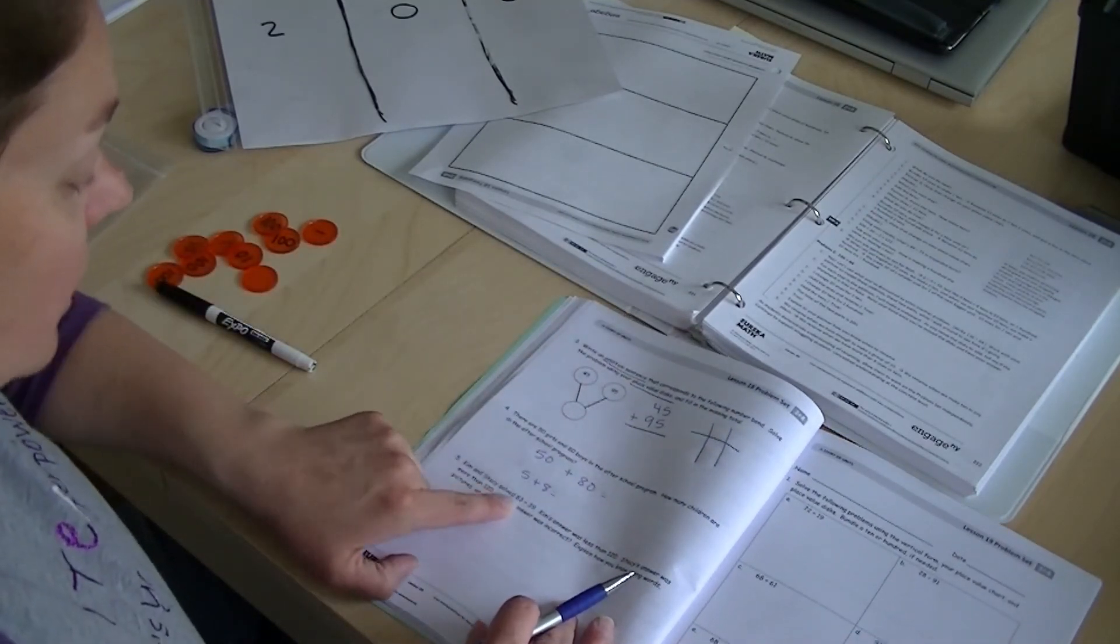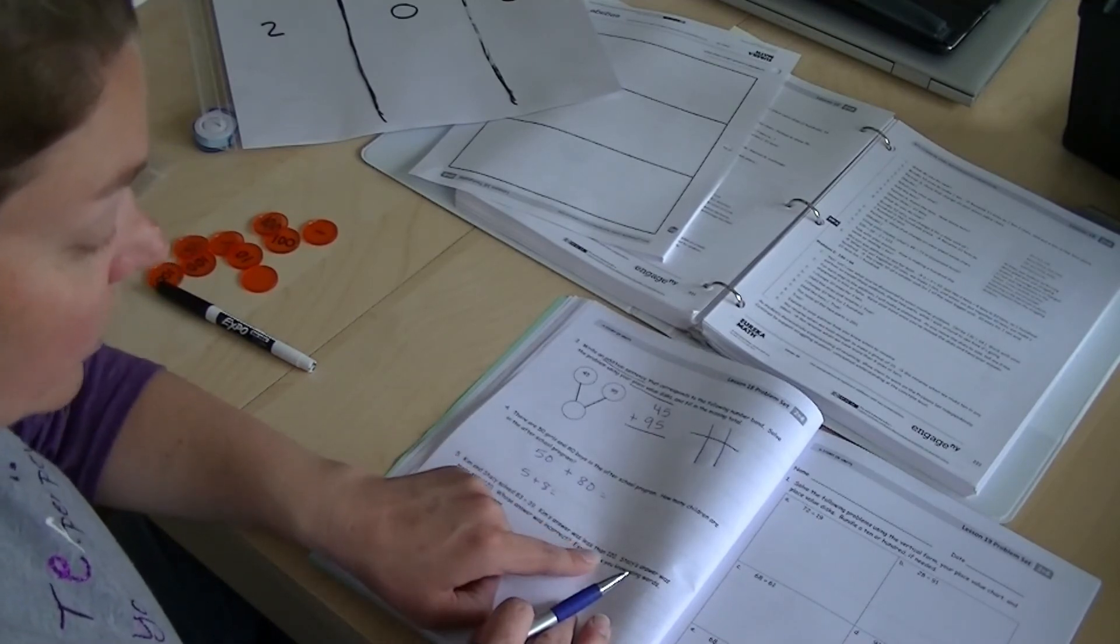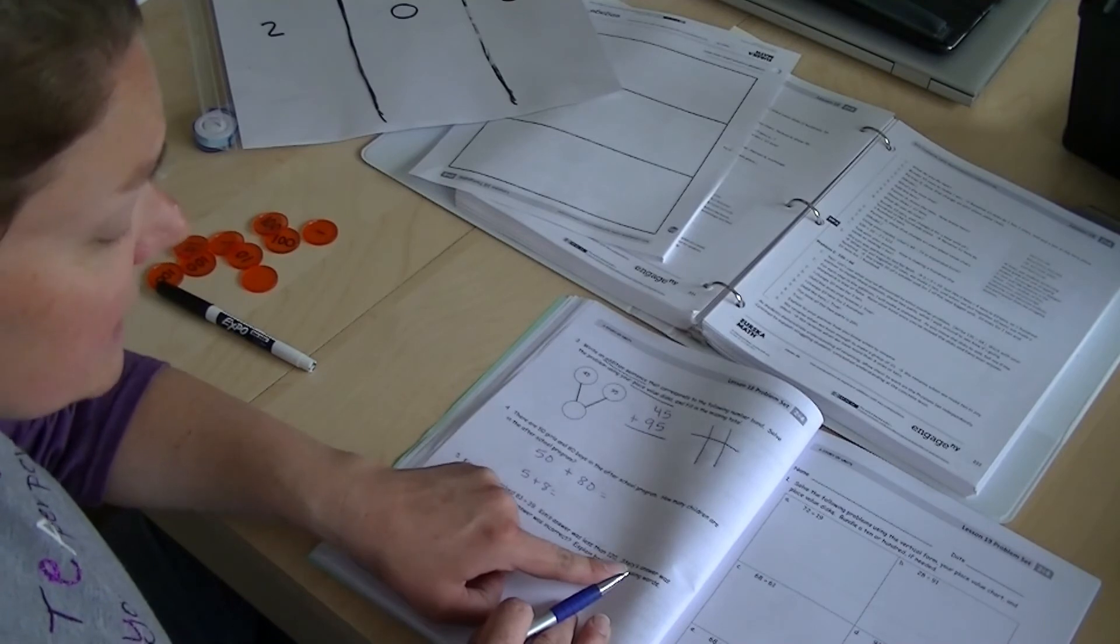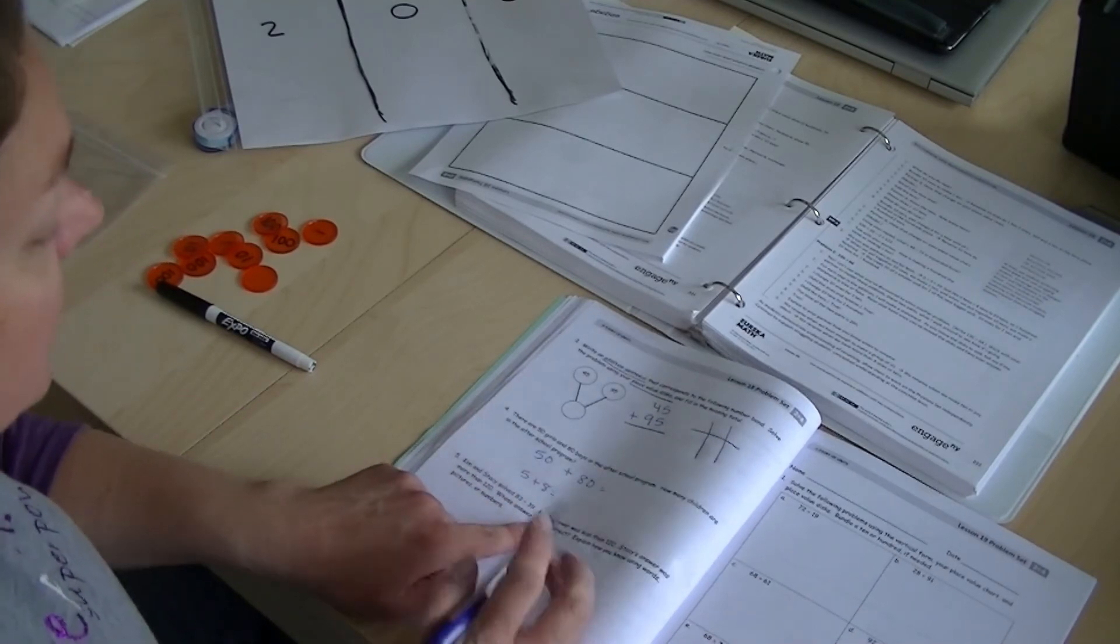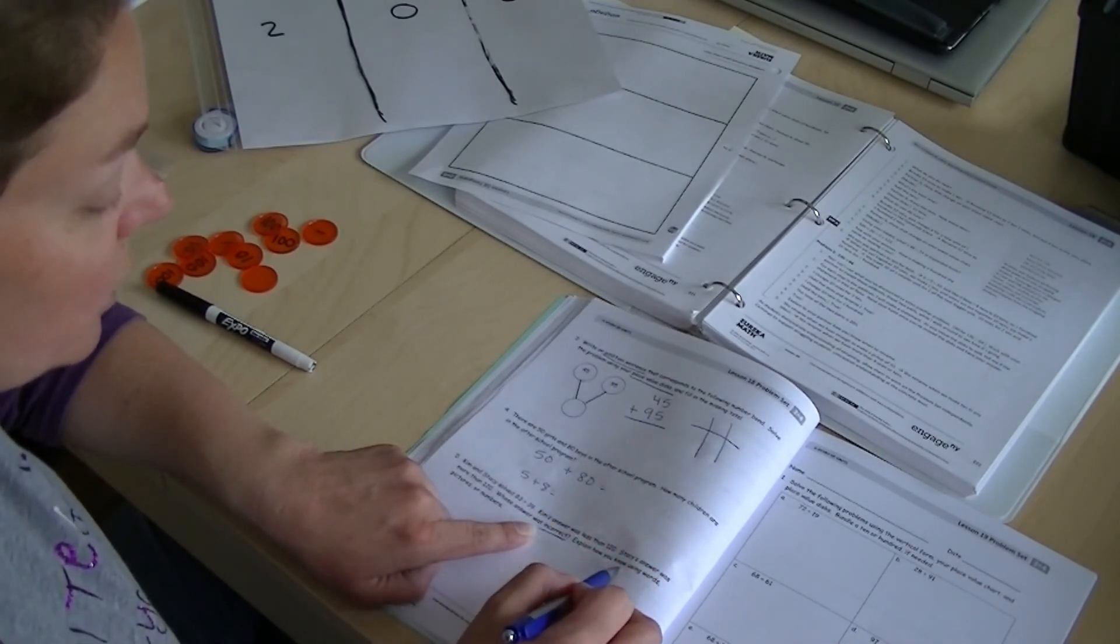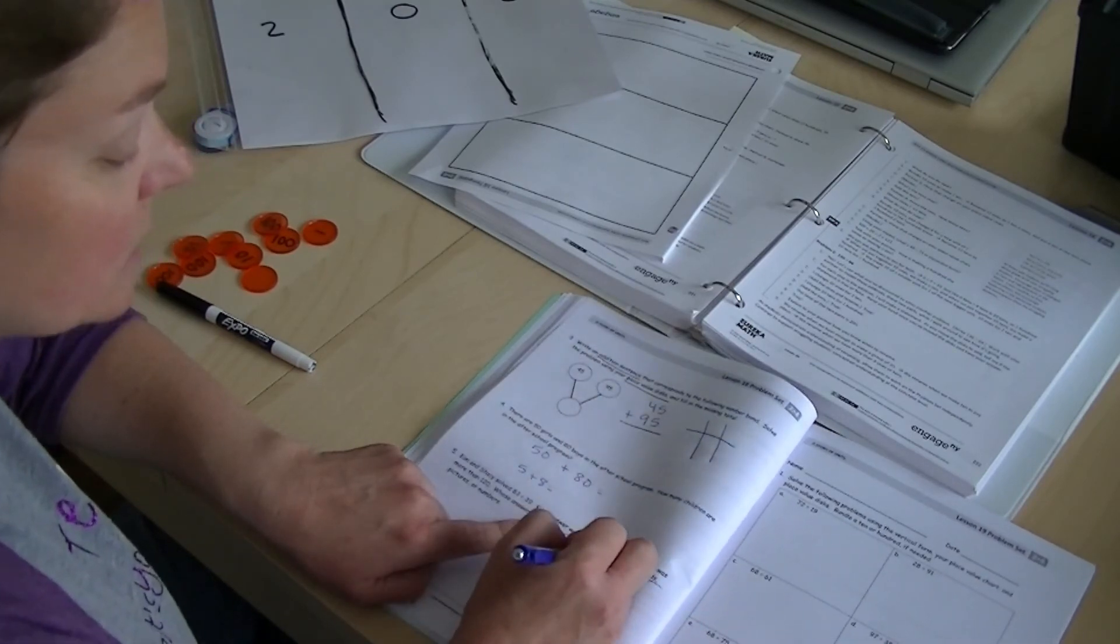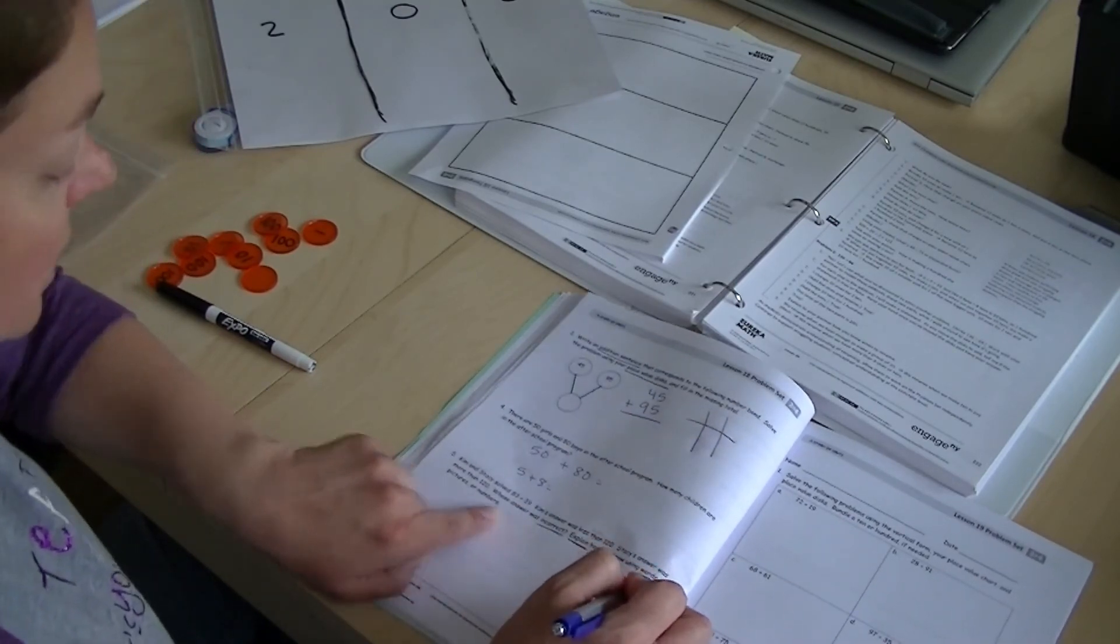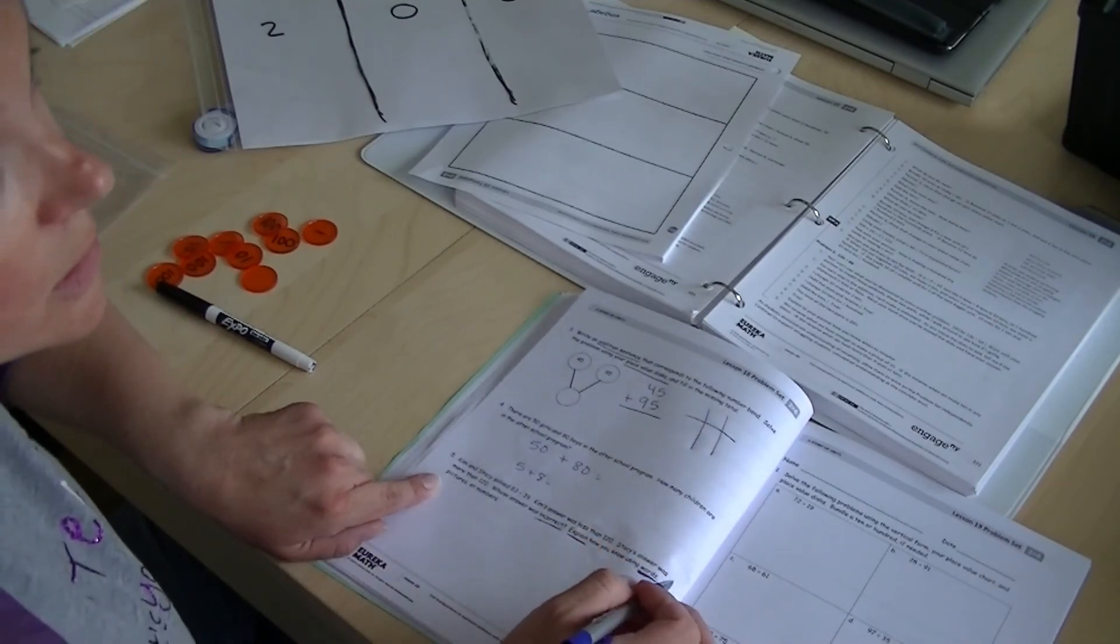Kim and Stacy saw 83 plus 39. Kim's answer was less than 120. Stacy's answer was more than 120. Whose answer was incorrect? Who was not correct? Okay, explain how you know using words. Remember we've talked about when it says explain you're using your words. Pictures or numbers. I want you to see if you can use your words.